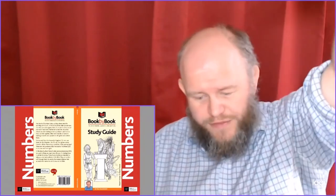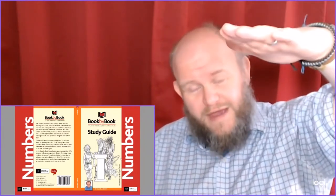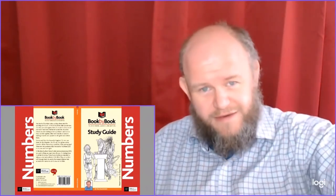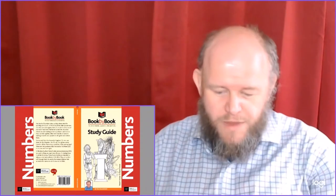Going up to the north, furthest north is Dan, then Asher, then Naphtali towards the center by the tabernacle. There's 150,000 of them.